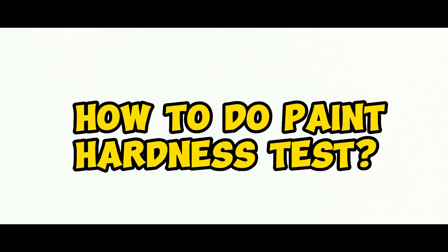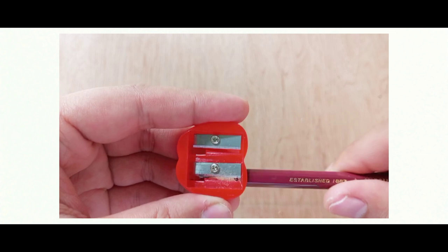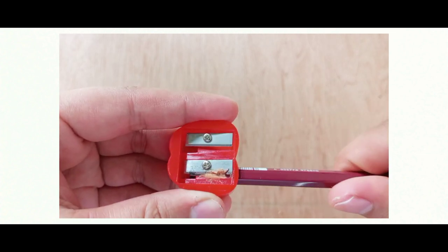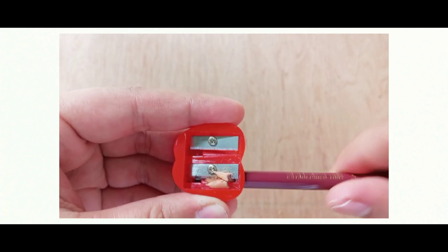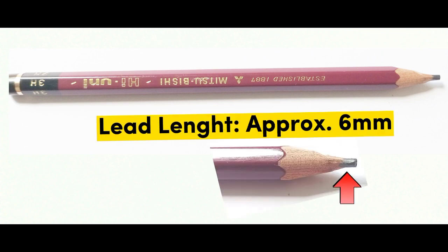How to do paint hardness test? First, prepare the pencil by using the sharpener. Expose approximately 6 mm of lead without reducing the original diameter of the pencil.